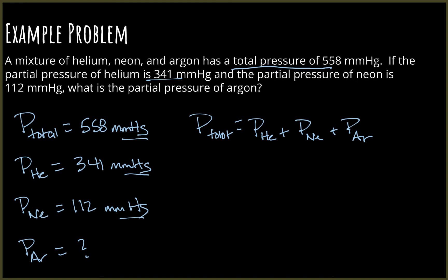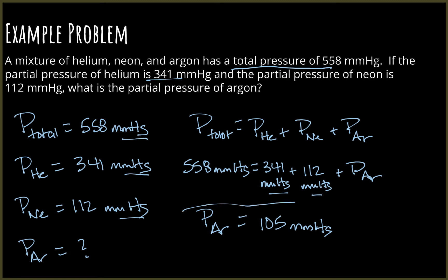This one, we don't have to do that because they were all given in millimeters of mercury. So 558 mmHg was my total, helium was 341, neon was 112, and argon is what I'm solving for. I'm going to subtract these from the total. So the partial pressure of argon is 105 mmHg. Sometimes it'll ask you to convert it to something else once you solve, but this one didn't specify that.